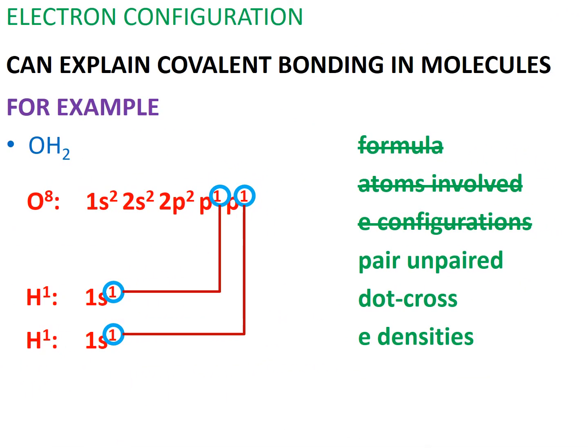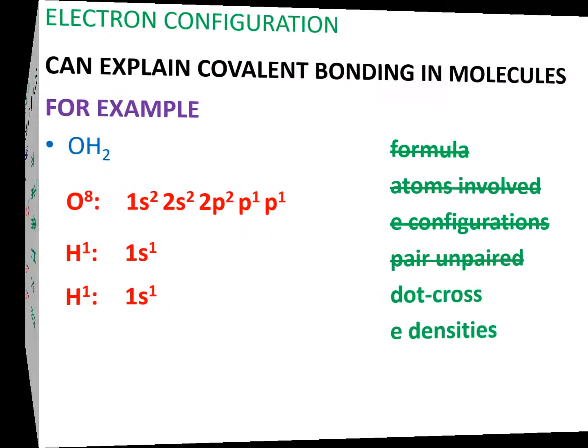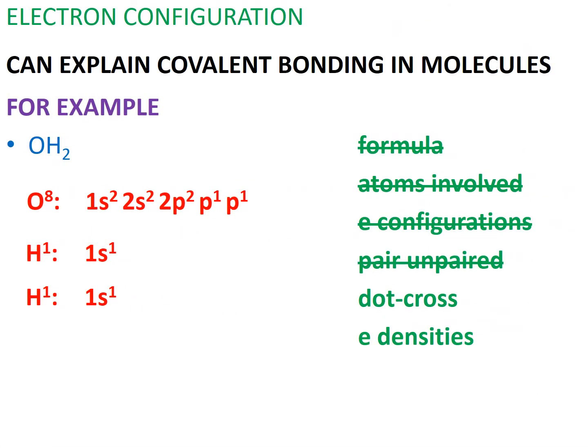Now we can see that the central atom, oxygen, has two unpaired electrons and will therefore form two covalent bonds with the two hydrogen atoms. We can also show the bonding of these orbitals using dot-cross diagrams.